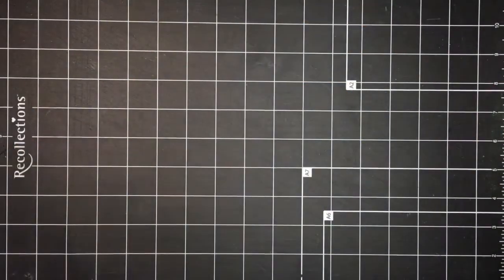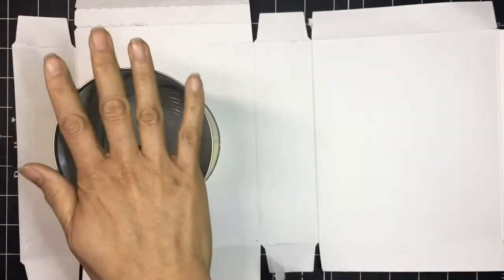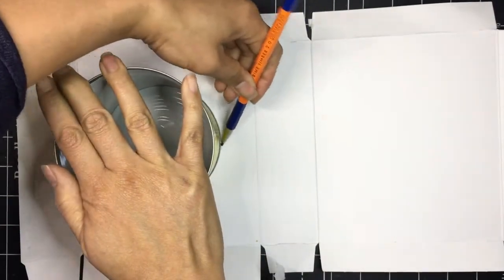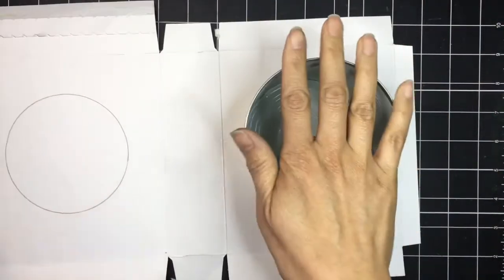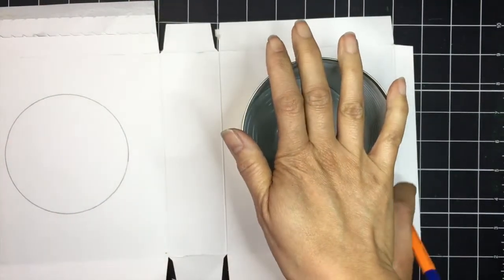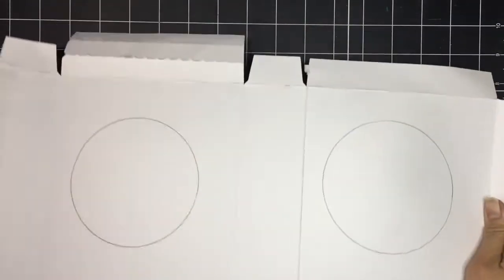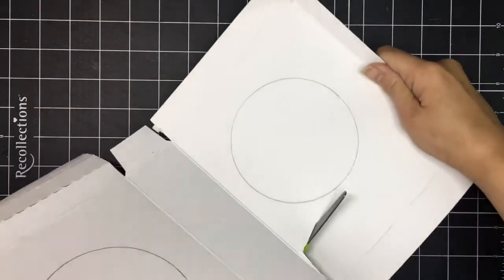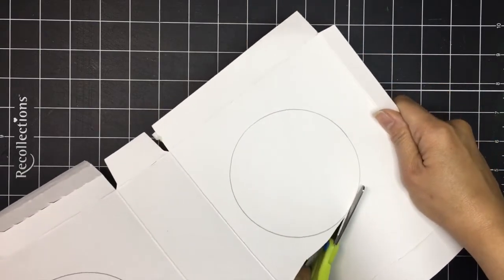Take a large can and trace it two times on the cardboard box. Using scissors, carefully cut out the two circles. If you need help, be sure to ask your mom or dad.